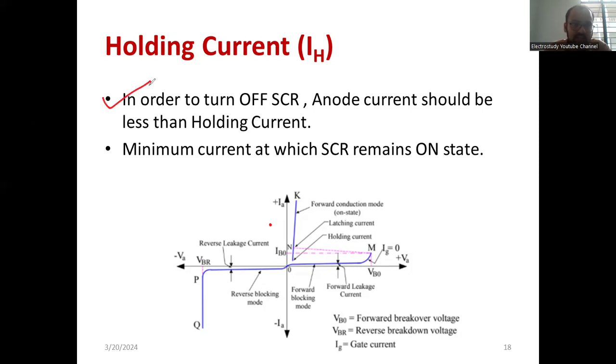In order to turn off SCR, we are talking about the holding current. In order to turn off SCR, what is the condition? You know, the anode current. Look at this. Anode current is like, it is belong to y-axis. What is the requirement? In order to turn off the SCR, the anode current should be less than holding current.